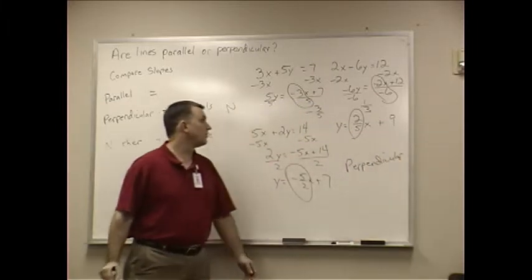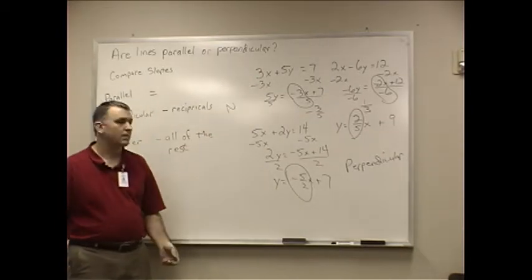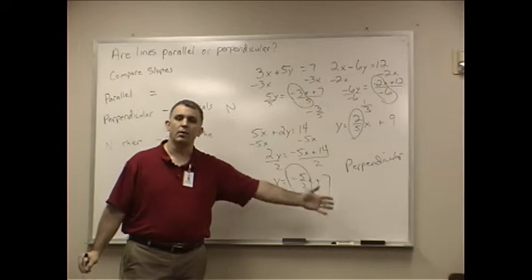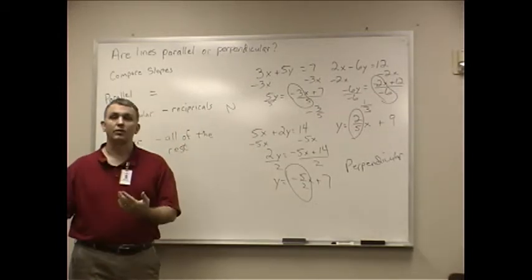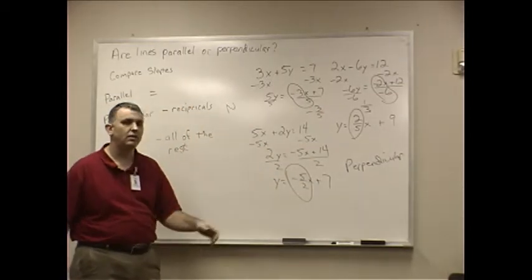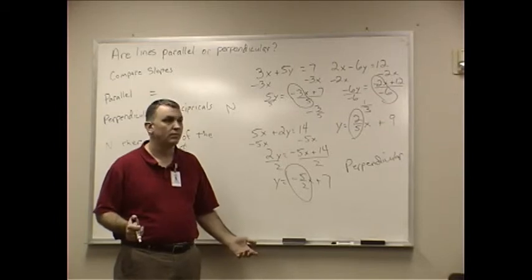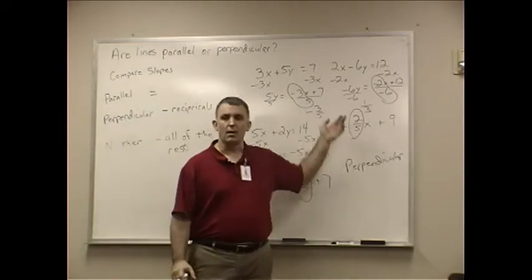So we have a neither here and we have a perpendicular here. Now, I could do an example with parallel, but the process is the same. Get it to where you have the slopes, make a comparison. If the slopes are identical, the two lines are parallel. So there you have it, a couple of examples.